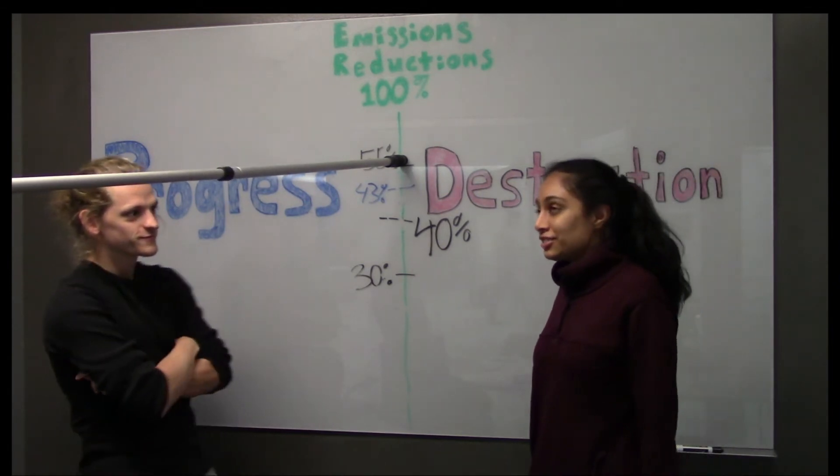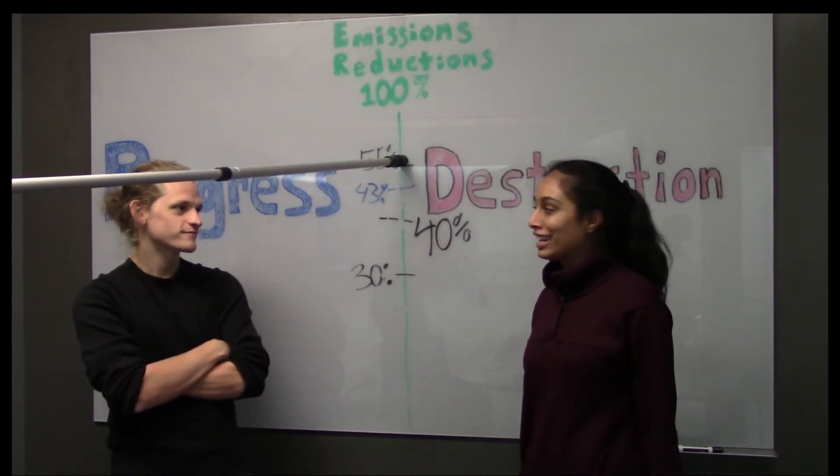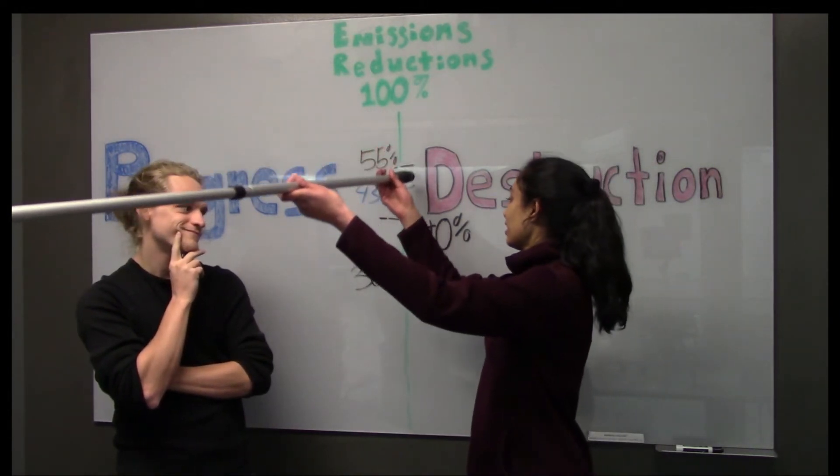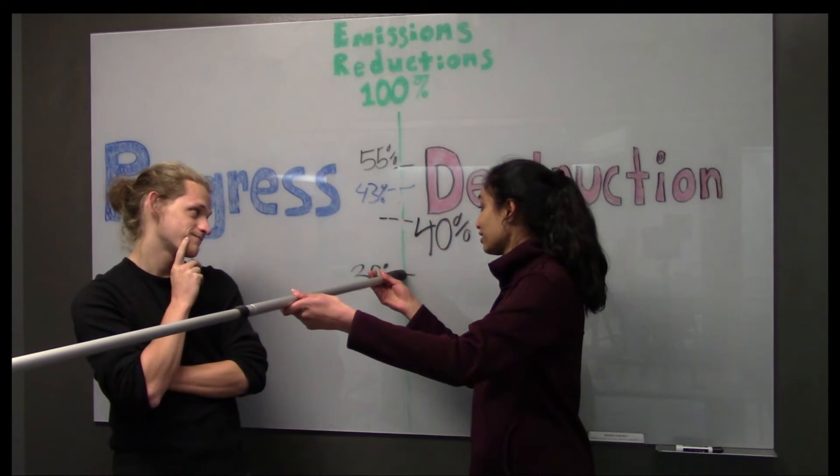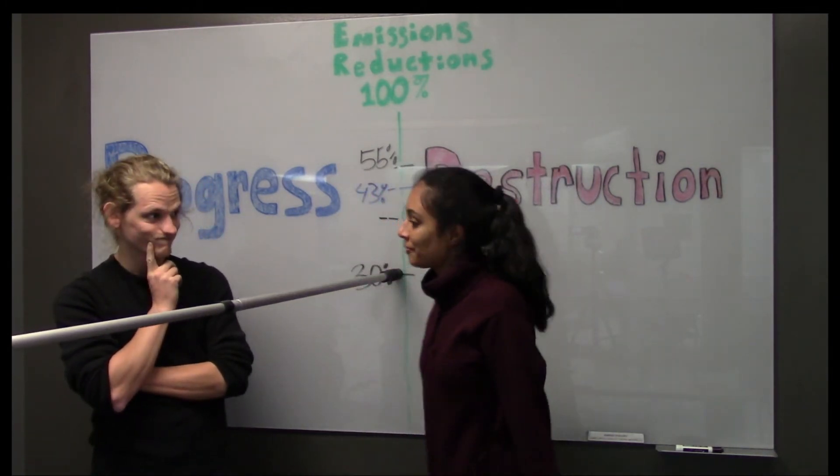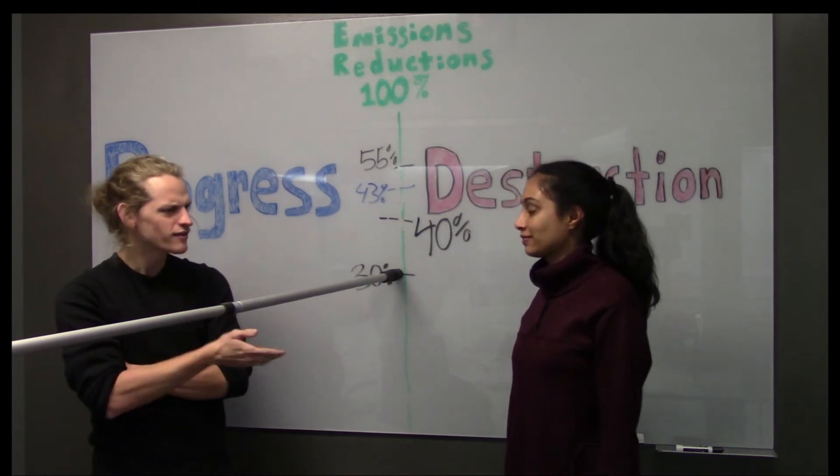Well, due to massive deforestation and a major lack of ambition, we actually were only able to get our emissions reductions down to 30%, and so I'm actually a bit stuck. Do you think you would help me out?